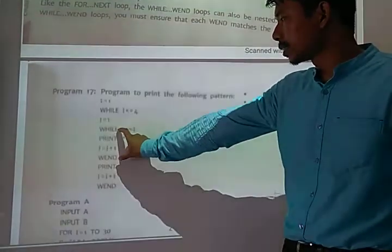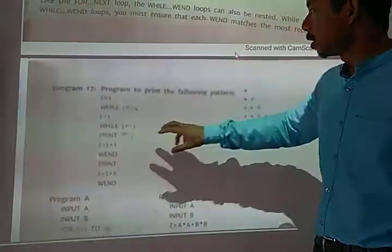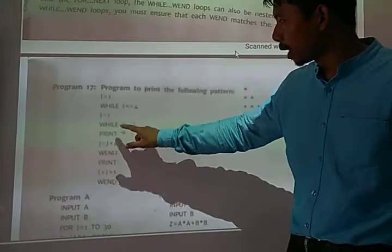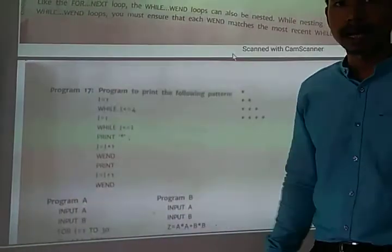So it means we are nesting this loop within the outer one. This one is the outer loop and this one is the inner loop. The inner variable is j and the outer variable is i.